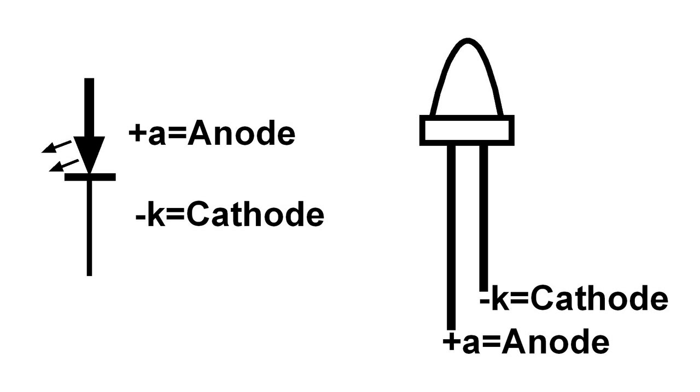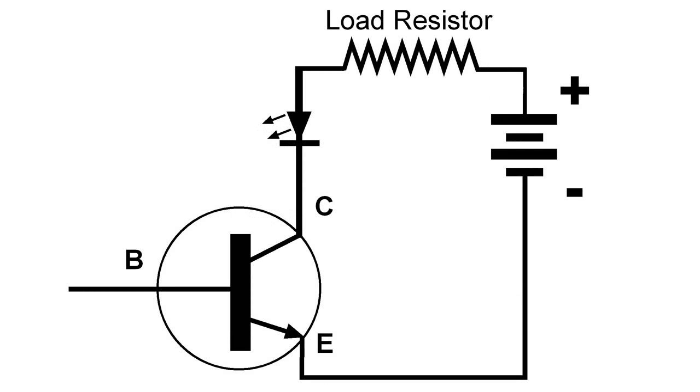And of course, it gives off light. Physically, the longer lead is the anode. That's the positive side of this diode. And it would fit into the circuit like this.